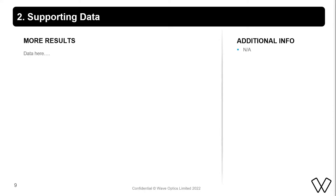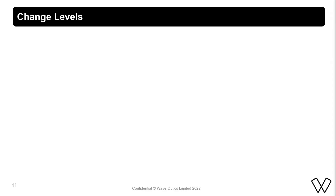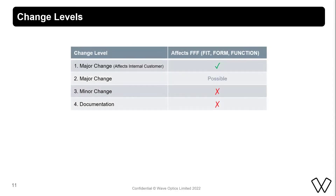Based on the procedure, a guideline is provided at the end of the slides. A level 1 change is a major change that will affect our internal customer — it will also affect the fit, form, or function of our product. A level 2 change is a major change and may affect the fit, form, or function of our product. A level 3 minor change or a level 4 document change will not affect the fit, form, or function of our product.